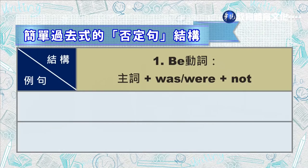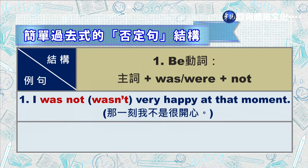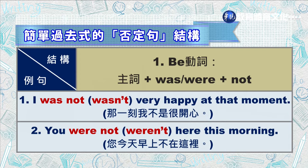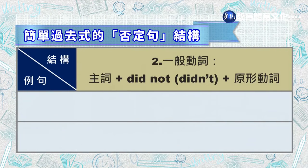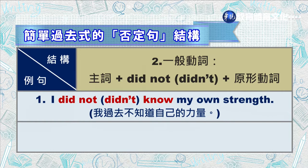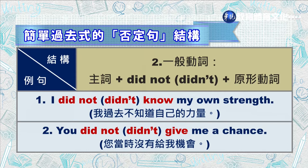接着我们一起来学习简单过去式的否定句结构。第一种是 be 动词，结构是主词加 was 或 were 加 not。例句一：I was not very happy at that moment，那一刻我不是很开心。例句二：You were not here this morning，你今天早上不在这里。第二，一般动词的句型是主词加 did not 加原型动词。例句一：I did not know my strength，我过去不知道自己的力量。例句二：You did not give me a chance，你当时没有给我机会。